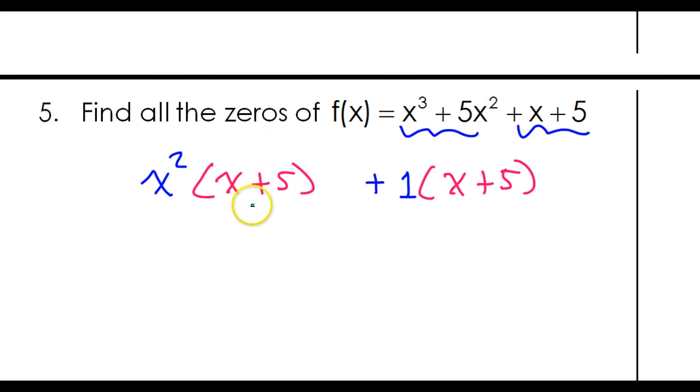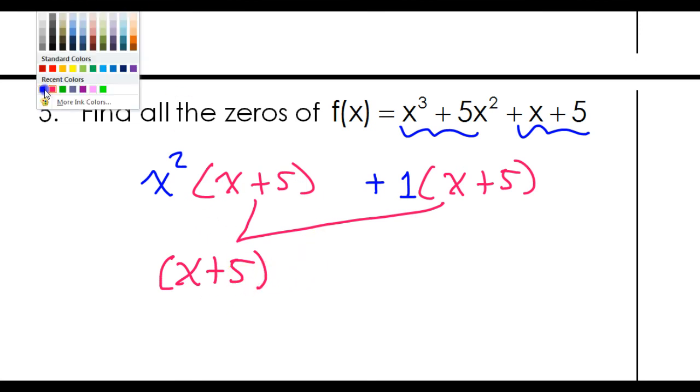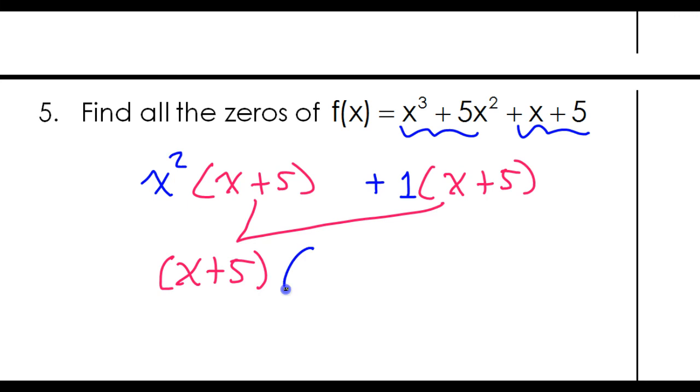That's the key to the grouping method, is there has to be a second common factor, a common binomial or something. If there is, you can factor that out. So I can take this x plus 5 and factor it out. I can undistribute it, pull it out front. And of course that's going to leave behind the blue stuff. So that's going to leave behind x squared plus 1. Okay? So I have now factored this polynomial.